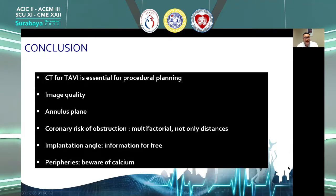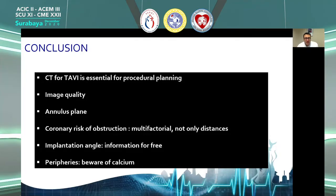To conclude: CT for TAVI is essential for procedural planning, better procedural outcome, and hence better patient outcome. Image quality is decisive and must be worked upon as it directly translates into better reporting and better procedural outcomes. Spend time on the annular plane — learn how to get there, and if not satisfied, repeat. Coronary obstruction risk is multifactorial — not only distances but other parameters contribute. The implantation angle is information that comes for free from the CT dataset. For peripheries, be aware of calcium, especially in the presence of tortuosity and circular calcifications. Thank you very much.